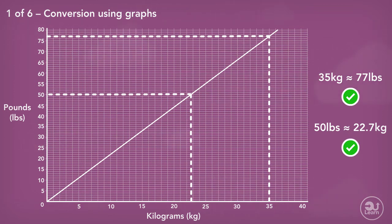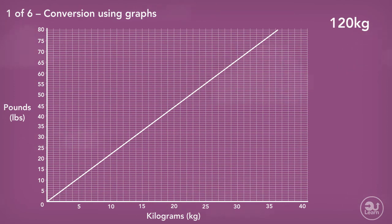What if we wanted to find the conversion of a value that isn't on the graph? For example, 120 kilograms. Since the units have the same relationship, we can find the conversion value of a factor of 120 kilograms using the graph, then multiply to get to the answer.